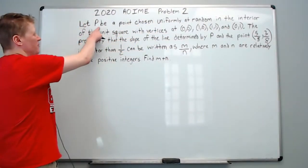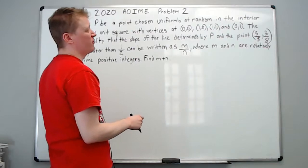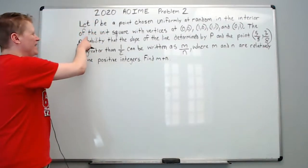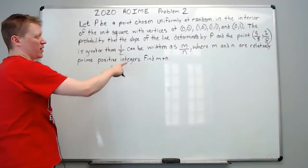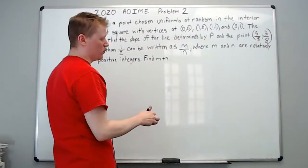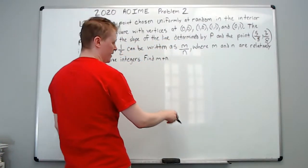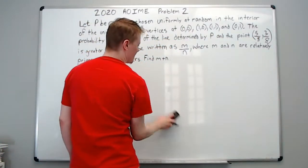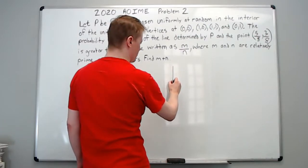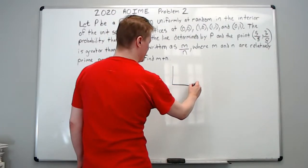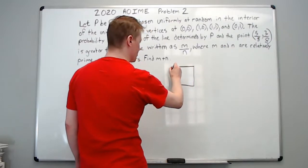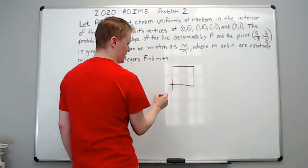This is 2020 AOIME problem number two. Let P be a point chosen uniformly at random in the interior of the unit square with vertices at (0,0), (1,0), (1,1), and (0,1). Let's make sense of that — you have the first quadrant basically, and we draw the square going over to (1,0), (1,1), and (0,1).